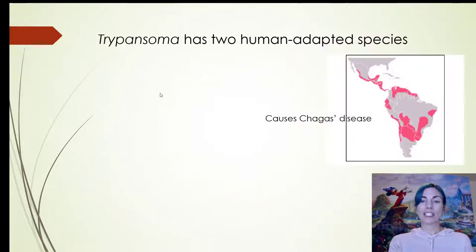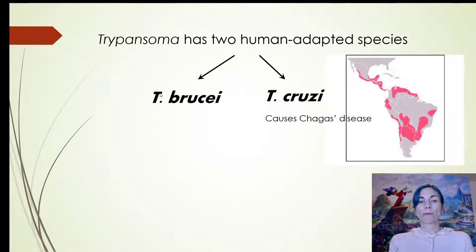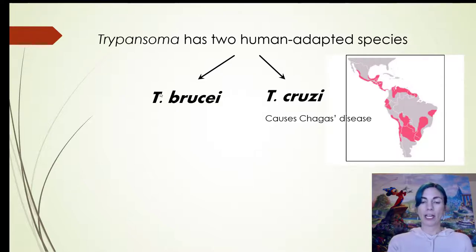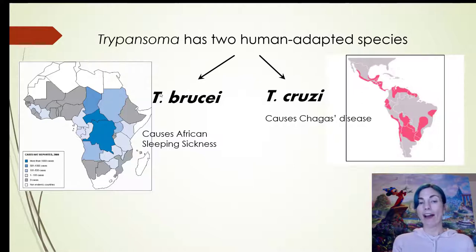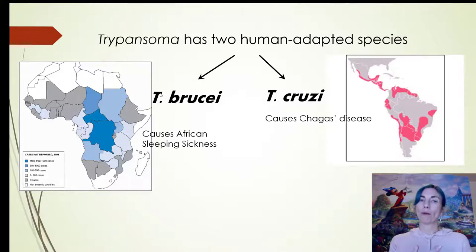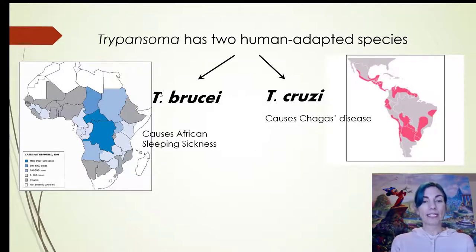Trypanosoma has two different species: Trypanosoma cruzi and Trypanosoma brucei. Trypanosoma cruzi is found largely in South America and Latin America and causes Chagas' disease. We're going to focus on Trypanosoma brucei, which causes African sleeping sickness — one found in the Americas, one in Africa. The two have different disease presentations, and we'll focus only on Trypanosoma brucei due to time.